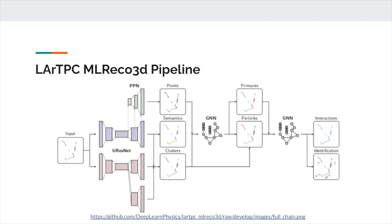In the pipeline for the LAR-TPC-ML-RICO-3D algorithms, the 3D image is first passed through the U-ResNet program, which completes the semantic segmentation step. Then the data moves on to the PPN program, which identifies the points of interest. Next, the data is passed on to GNN and GraphSpice for clustering, and then through GNN again for the identification step.